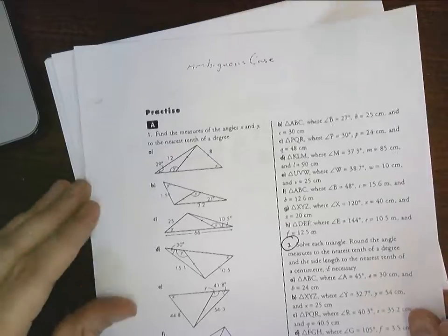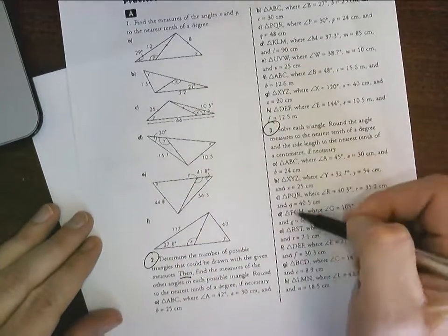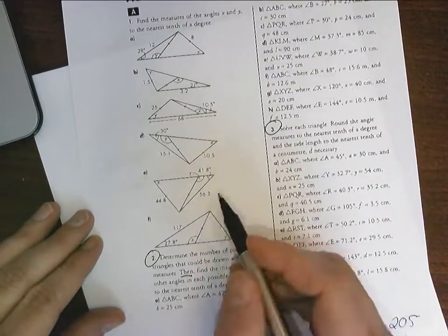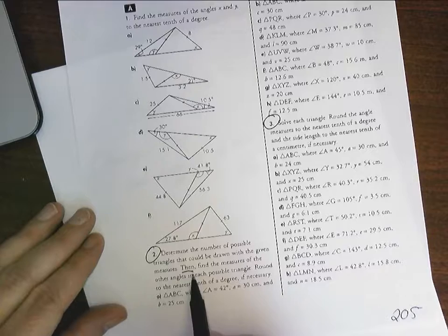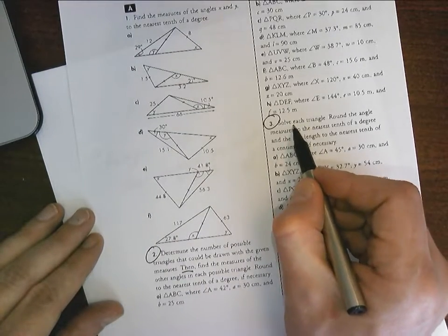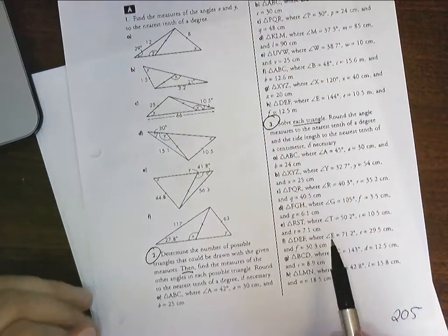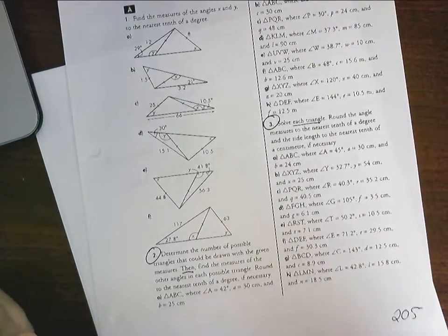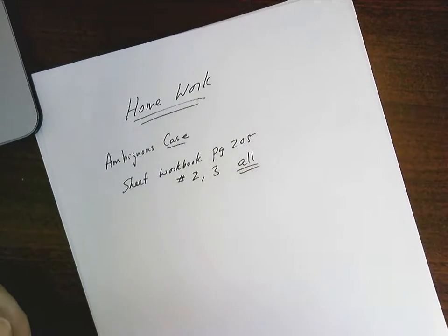The sheet looks like this. Number 2 and down, number 3 and down, you don't have to do 1, and do what it says. Determine the number of possible triangles that can be drawn, then find the measures of the angle. This one says solve each triangle, okay? So you'll have to go through, find out how many triangles can be made, and then solve for them. So that's your first set of homework, that's the ambiguous case. Do some good work on that.